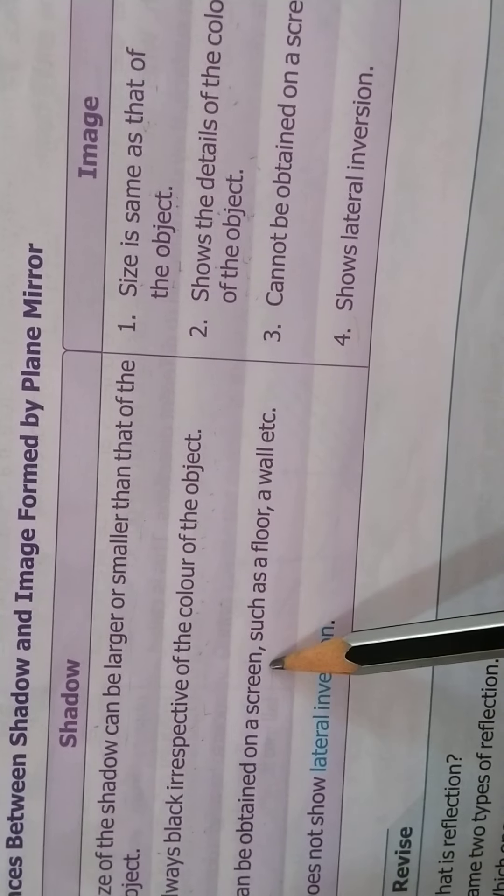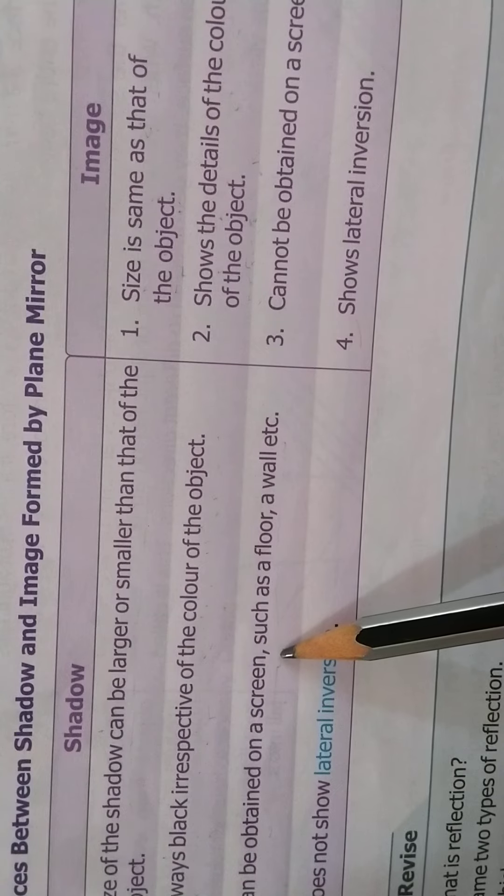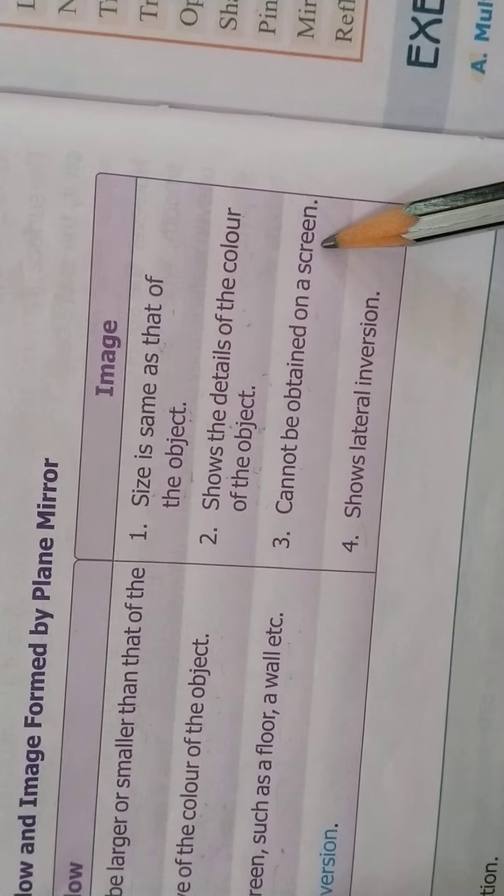Can be obtained on a screen such as a floor, a wall, etc. Shadow is always obtained on a screen. The screen can be floor or wall. Image cannot be obtained on a screen.